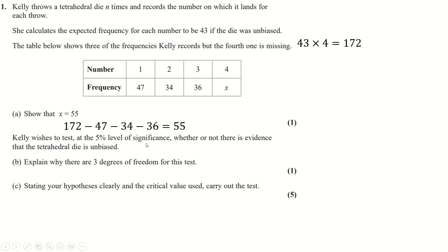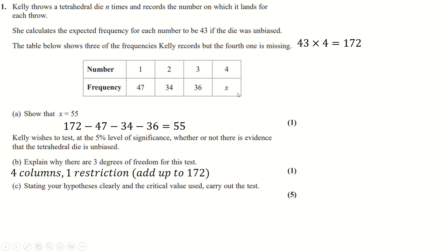Testing at 5% significance whether or not there is evidence this die is biased. There are 3 degrees of freedom because there are four columns and one restriction — they must add up to 172. So 4 minus 1 gives us 3 degrees of freedom.